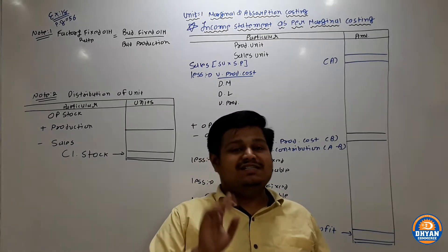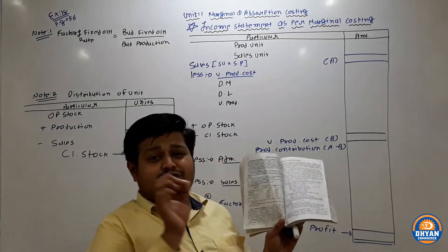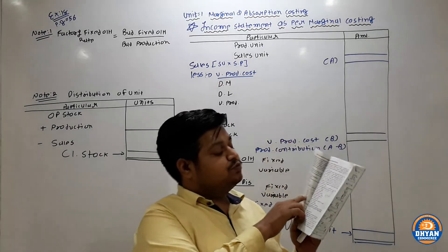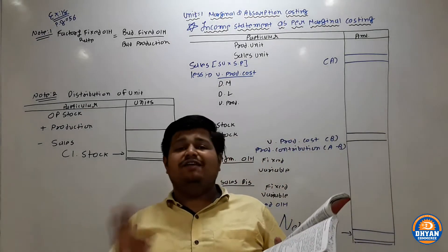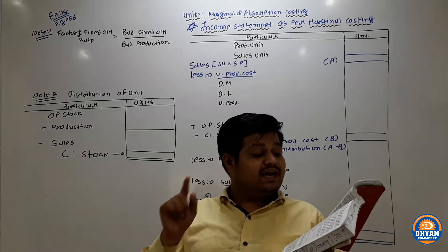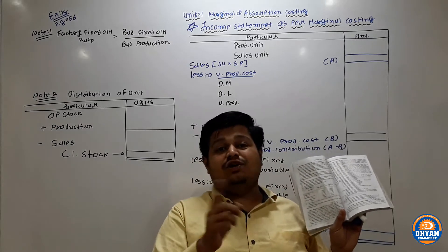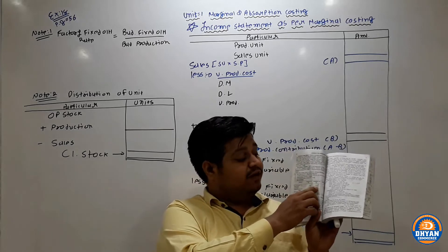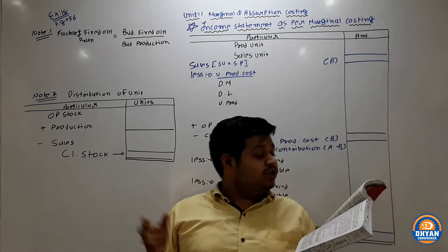Moving ahead to other information: a table is given with columns for Particular, Marginal Cost, Absorption Cost, and Difference. Production cost per unit is Rs. 35 under marginal and Rs. 40 under absorption — the difference of 5 is your factory fixed overhead rate. Opening stock information is also provided.